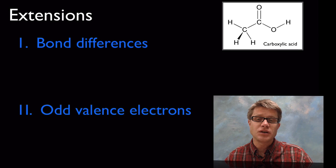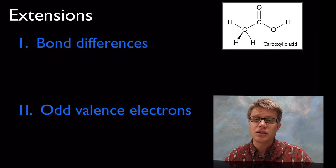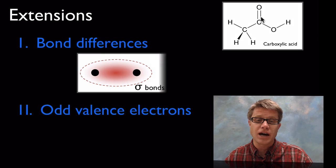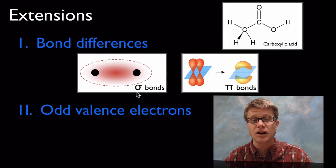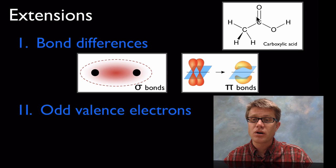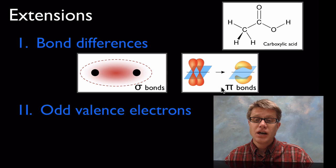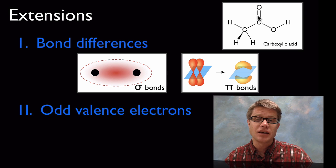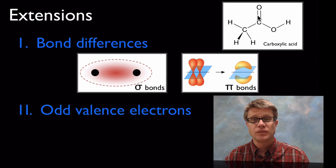Some extensions we have to build onto the VSEPR model: not all bonds are the same. Single bonds are different from double bonds because the orbitals start to overlap. In a single bond we have a sigma bond, where electrons are shared between the nuclei. As we add more shared electrons, we use an overlap of orbitals and get pi bonds. So a double bond is one sigma bond plus one pi bond, and a triple bond has a sigma and two pi bonds. Pi bonds are weaker but also lock the molecule in place, allowing formation of isomers.